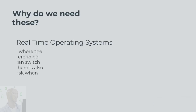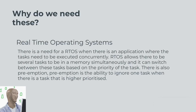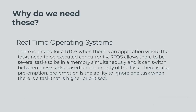Why do we need these? For real-time operating systems, there is a need for RTOS when there is an application where the tasks need to be executed concurrently. RTOS allows several tasks to be in memory simultaneously and it can switch between these tasks based on the priority of the task. There is also preemption — the ability to ignore one task when there is a task that is higher prioritized.